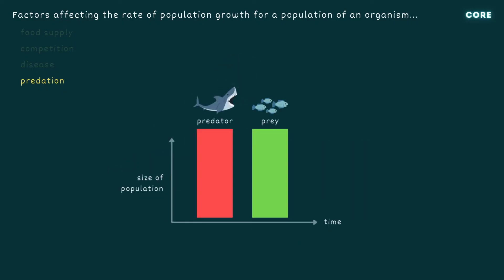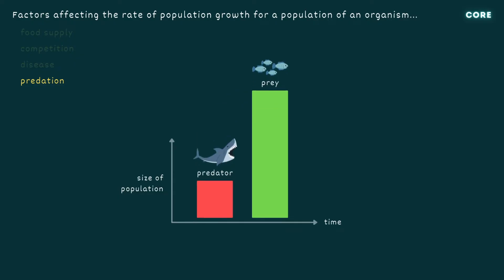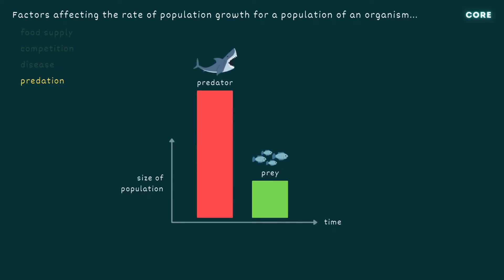Finally, most populations are directly affected by predation. All other factors aside, a plant or animal's population will increase whenever predator numbers fall and decrease when predator numbers rise.